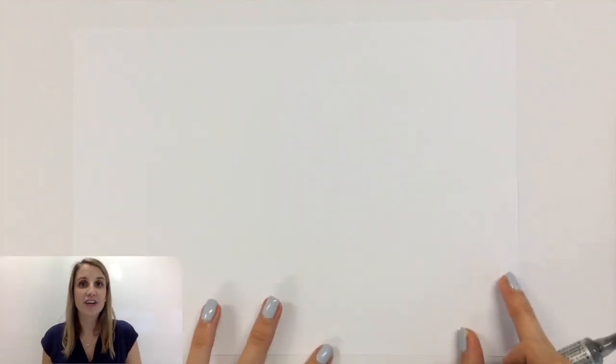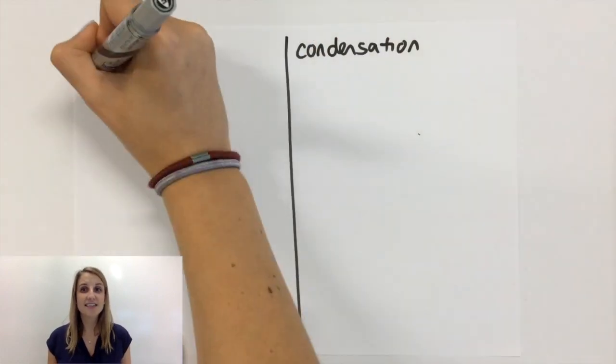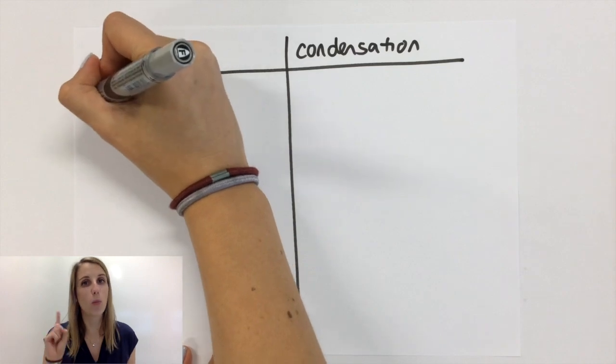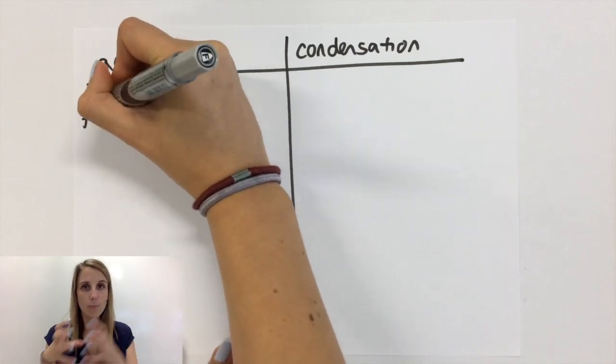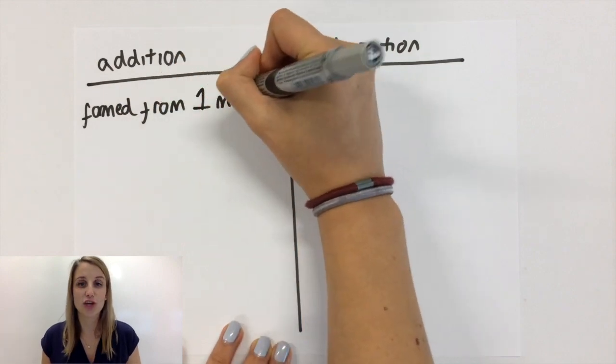The first difference between the two different types of polymerization is that addition polymerization only happens from one monomer, so one monomer joining on again and again forming those repeating units.